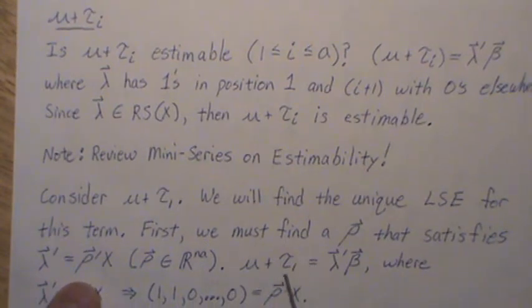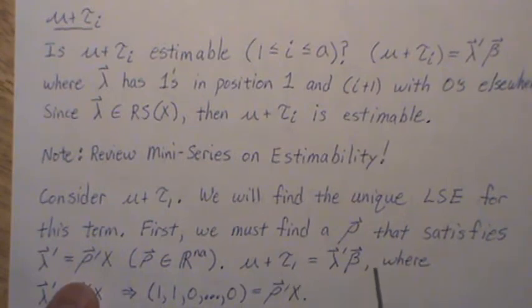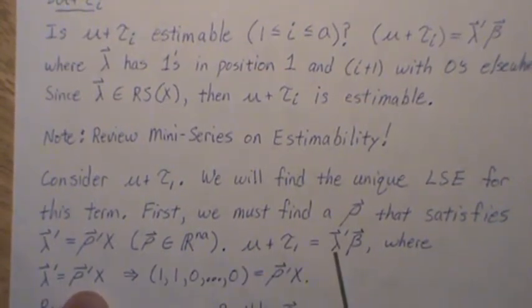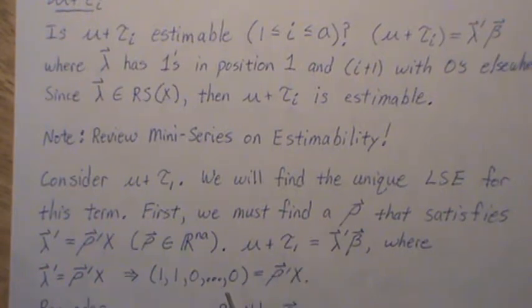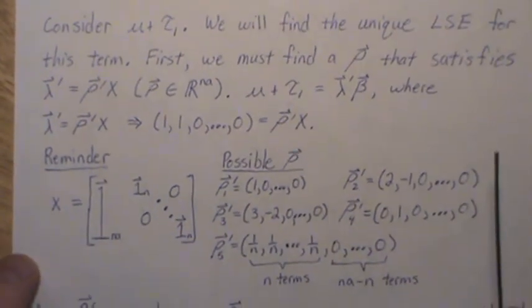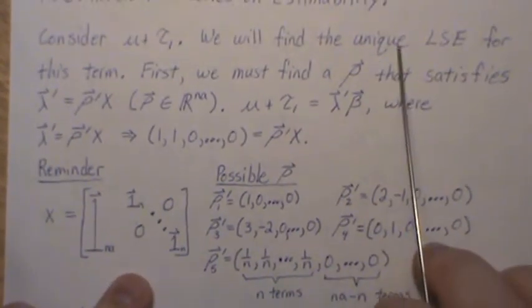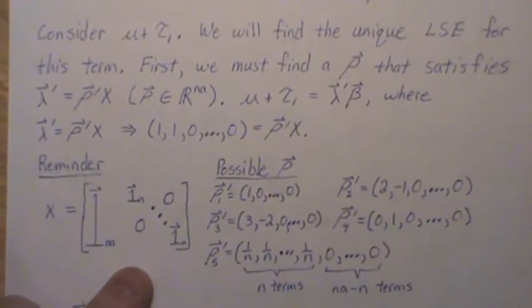We want to estimate the first treatment effect, μ + τ₁. So it has to be represented as a linear combination of the betas, where λ is row X. This λ has to be 1, 1, and the rest 0, so it picks off the μ and the τ₁. So λ'X has to be this. Now, there are an infinite number of possibilities. And hence, why this is unique is still just so surprising to me.